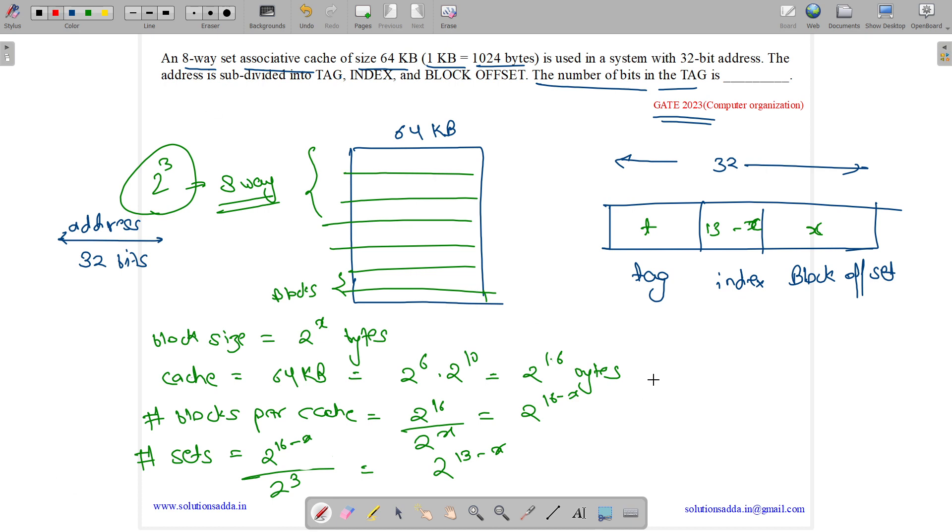So we will have the calculation like this: 32 equals to tag plus index plus block offset. 32 equals T plus 13 minus X plus X. This will get cancelled. We will get it to be 19 bits. So tag is 19 bits.